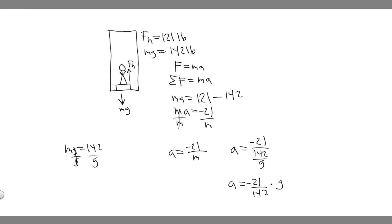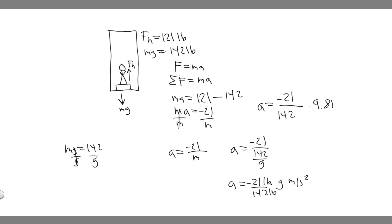So you get a equals minus 21 divided by 142, times g. What you should notice is the pounds units cancel, and we're left with meters per second squared, since gravity is measured in those units. The acceleration is minus 21 divided by 142 times 9.81. So do minus 21 divided by 142, then times 9.81, and you get a equals minus 1.45 meters per second squared.